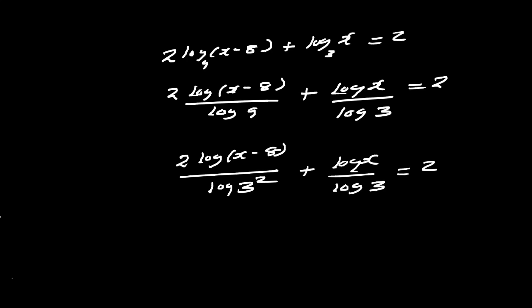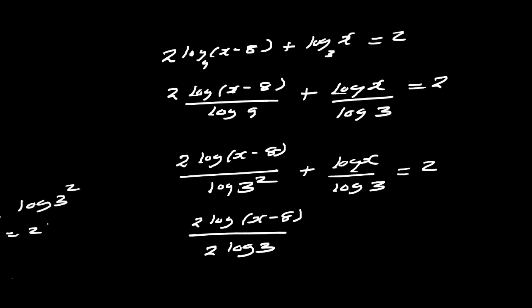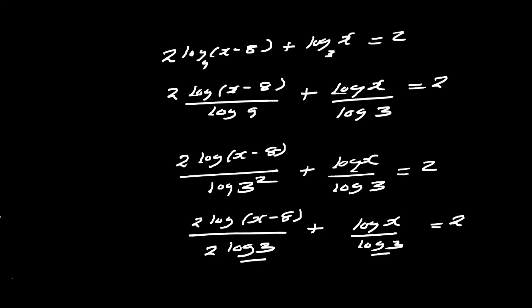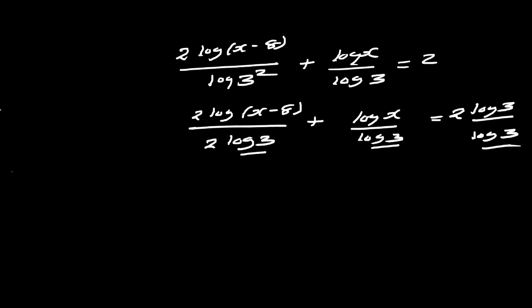So we have 2 log(x minus 8) over 2 log 3, plus log x over log 3, equals 2. The 2s in the first term cancel, leaving log(x minus 8) to base 3. Both terms are now to base 3. We also introduce log 3 over log 3 for the right-hand side — it's like introducing 1 — ensuring all terms share the same base.